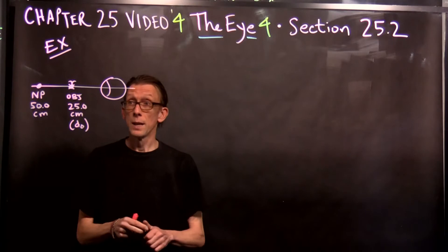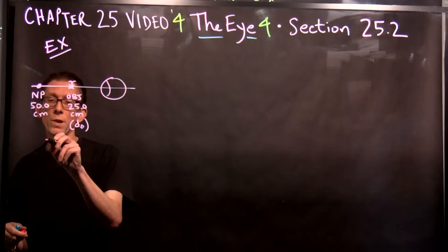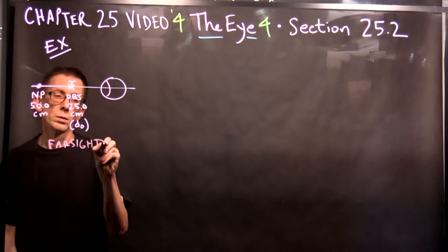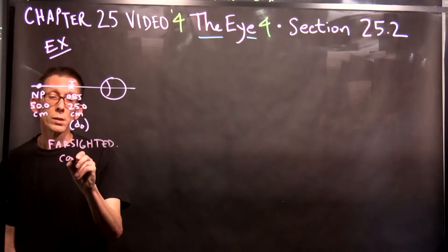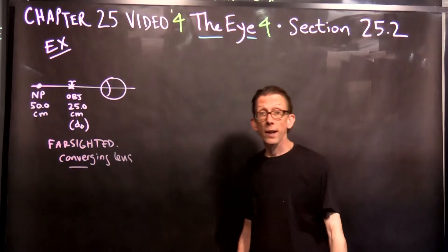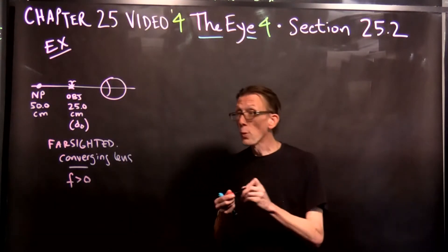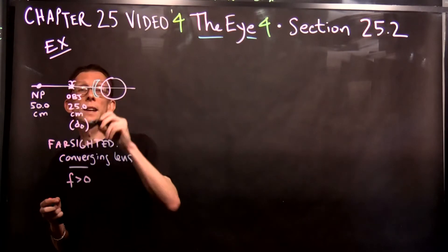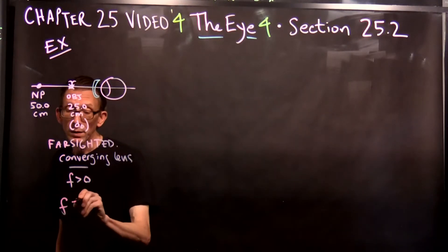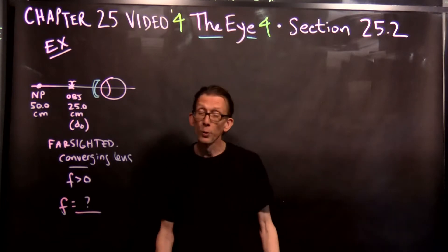So the near point's at 50 centimeters, the object is at 25 centimeters. This person cannot focus on that object because it's within the near point, so we need to give this person some corrective lenses. This is a farsighted patient. We need a converging lens to correct the farsightedness, which means converging lenses have positive focal lengths. And that's what we want to know — if we give this person corrective lenses, there's the glasses, the side view with the glasses, the question is what focal length do we need?